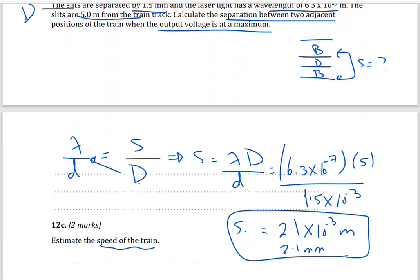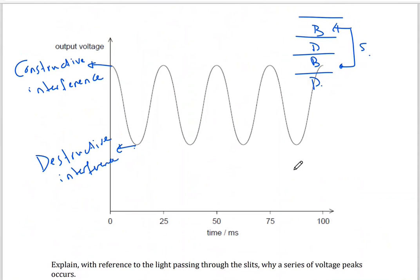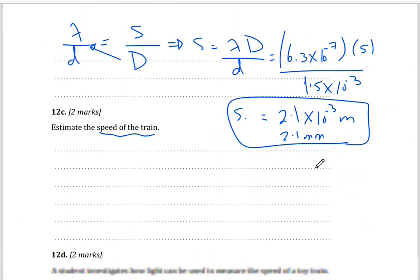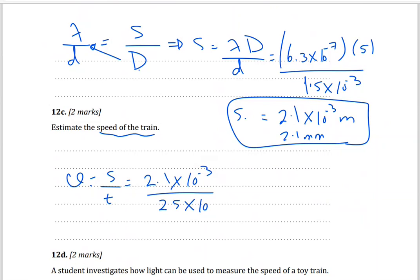Now estimate the speed of the train. Speed equals distance divided by period. Lambda here is the distance between two crests or two troughs — it equals S = 2.1 millimeters, as just calculated. The period is 25 milliseconds. So V = S / T = (2.1 × 10⁻³) / (25 × 10⁻³) = 8.4 × 10⁻² meters per second. Always write the unit.